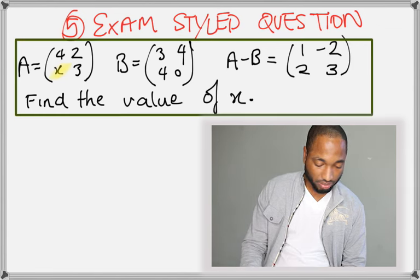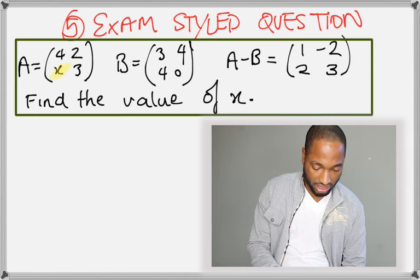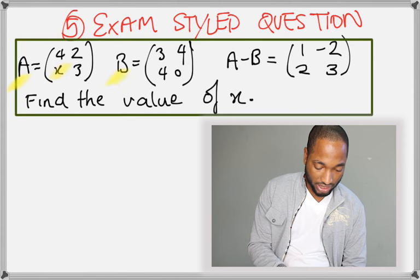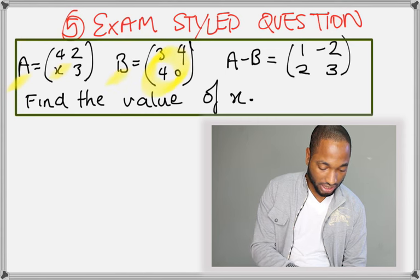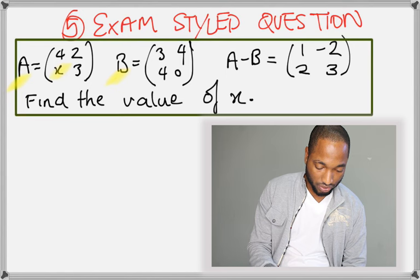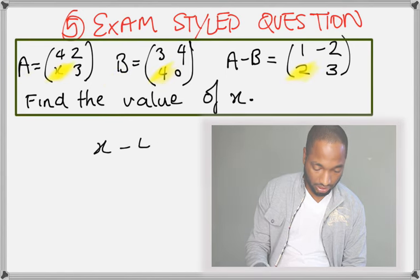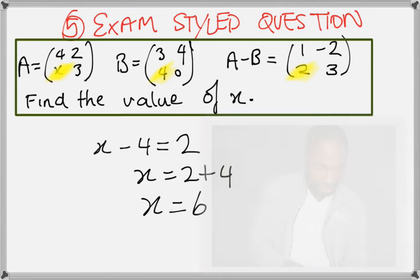Right? So, and they're saying a, a take away b is equal to this matrix here. Beautiful. And we know what a is, and we know what b is, because b is this matrix, and a is this matrix. Beautiful, beautiful. So, now, we can just use the corresponding terms with x. So, x is in the second row, first column, 4 here.